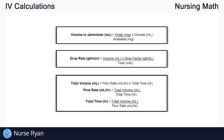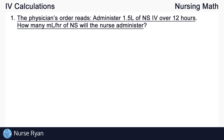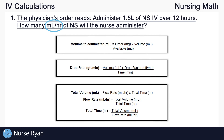Let's start with question number one. The physician's order reads: administer 1.5 liters of NS, or normal saline, IV over 12 hours. How many mils per hour of normal saline will the nurse administer? This question is asking us to find mils per hour as our answer. Looking at our formula sheet, we can find the formula that gives us an answer in mils per hour: flow rate in mils per hour is equal to the total volume in milliliters divided by the total time in hours.